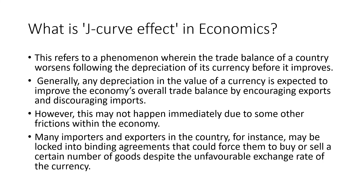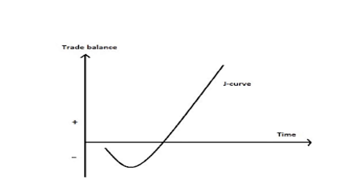The J-Curve effect can be seen in the form of a diagram. On the y-axis, trade balance is measured; on the x-axis, time is measured. The diagram shows what happens over a long duration after devaluation is introduced. Initially, the balance of trade deteriorates — as shown by the downward curve — but after that, it gradually improves, forming the shape of a J.